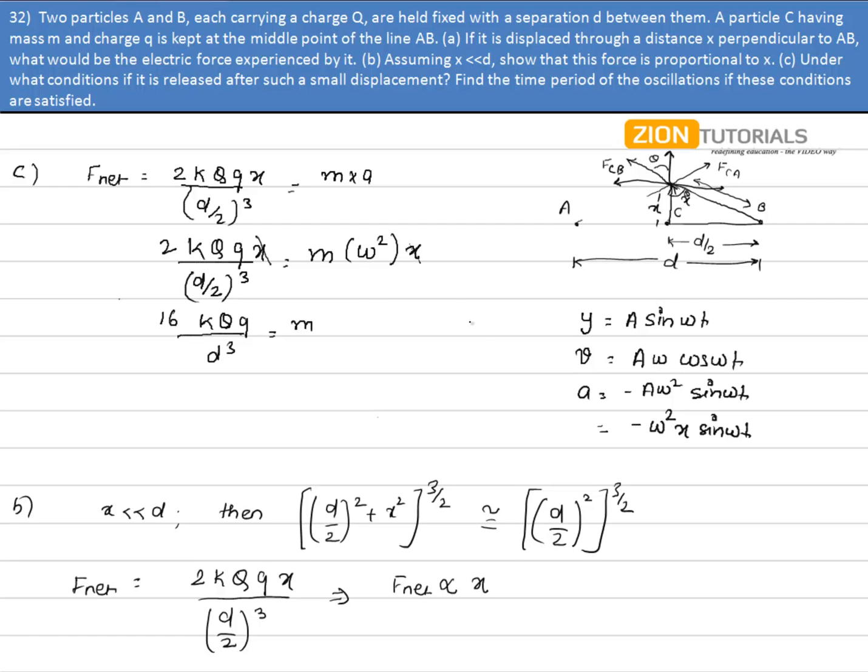Now omega as we know is given by 2 pi by capital T, so it will be 4 pi square divided by T square. So T can be easily calculated as m into 4 pi square into d cube divided by 16KQq to the power 1 by 2. That is my answer.